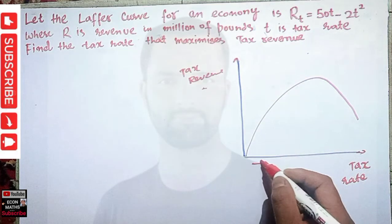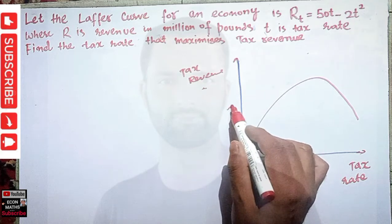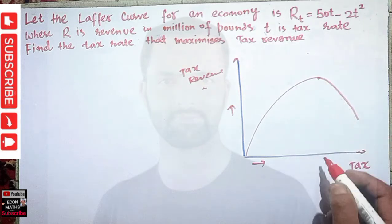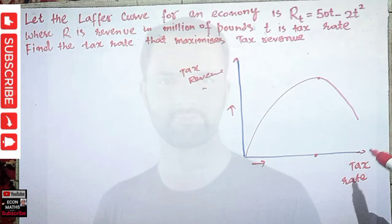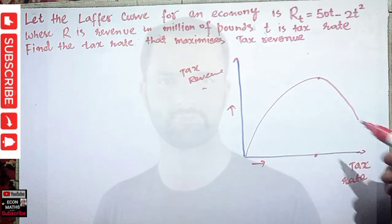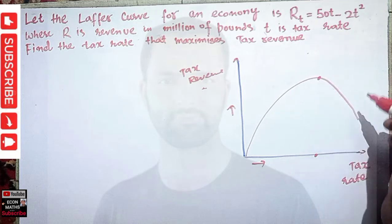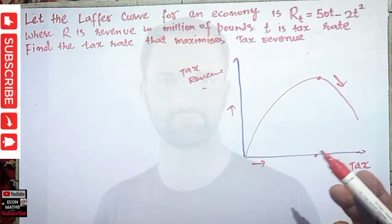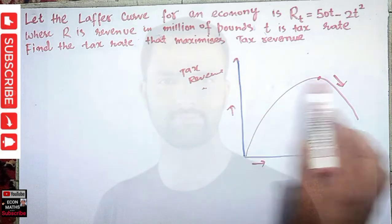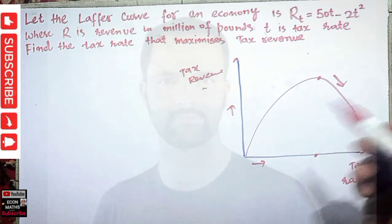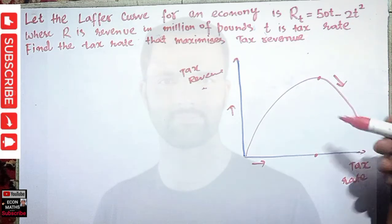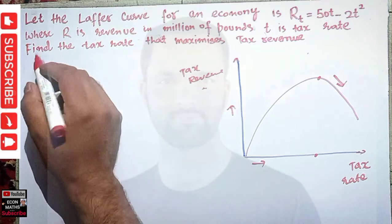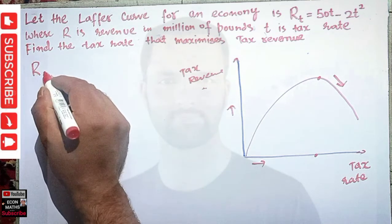What the Laffer curve says is: as the tax rate increases, the government's tax revenue also increases, but there comes a point — an optimum tax rate — beyond which if we try to increase the tax rate further, our tax revenue will actually decrease. So that point is the optimum rate of tax which maximizes the government's revenue.